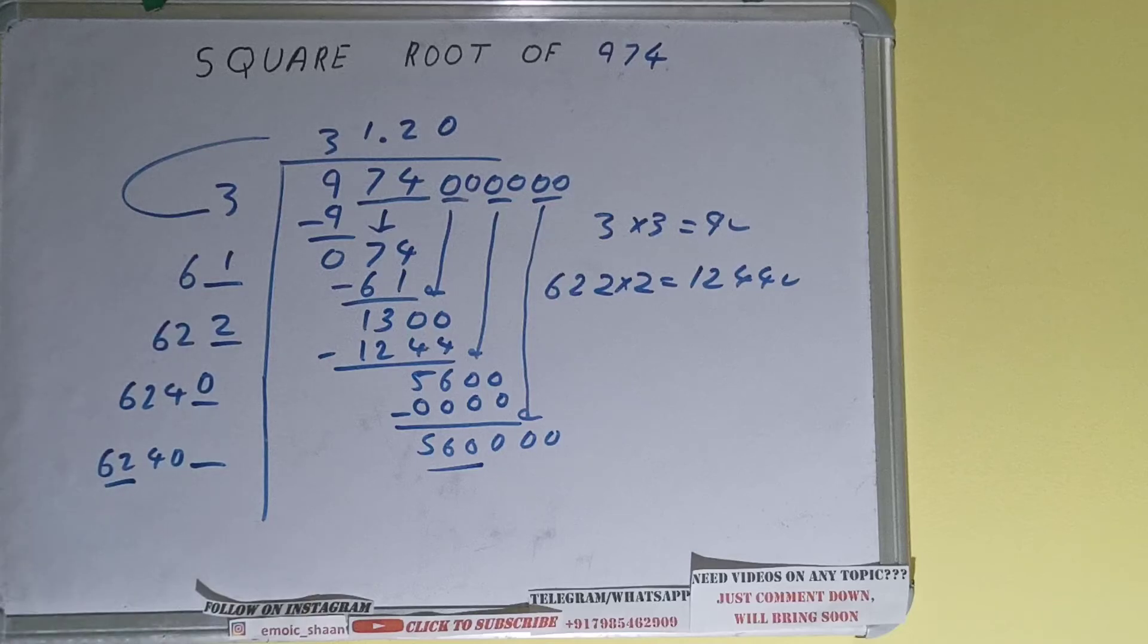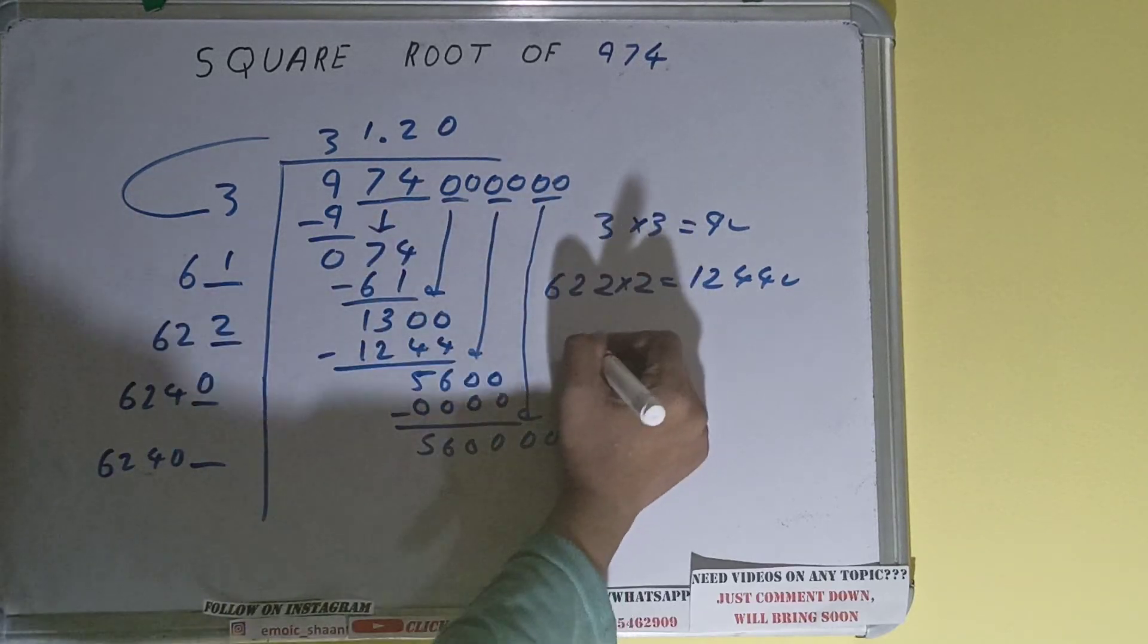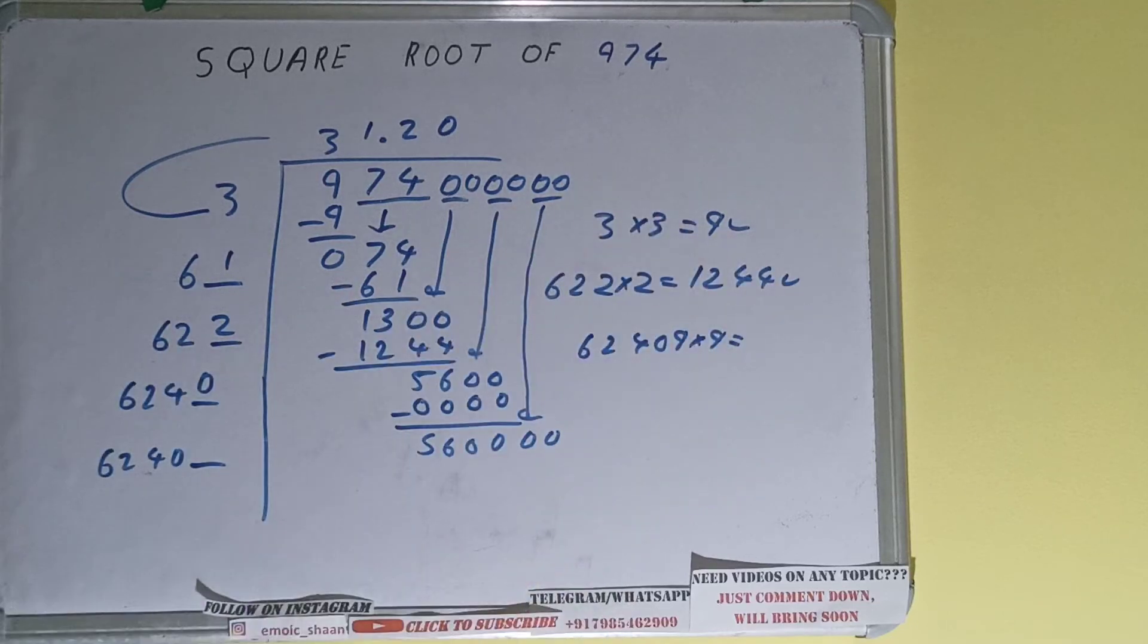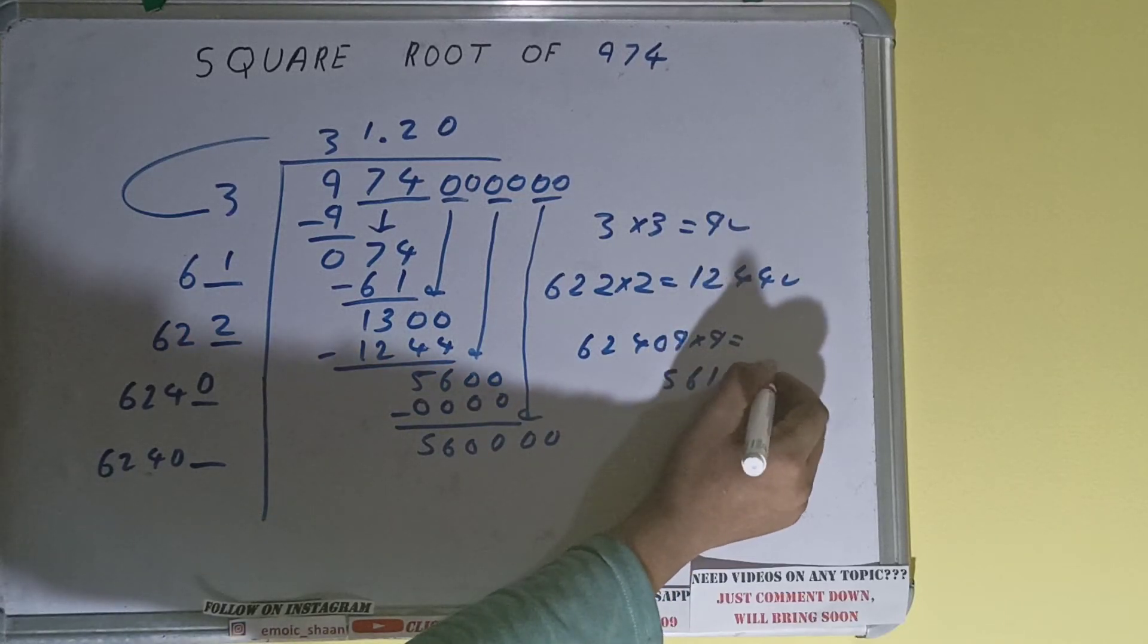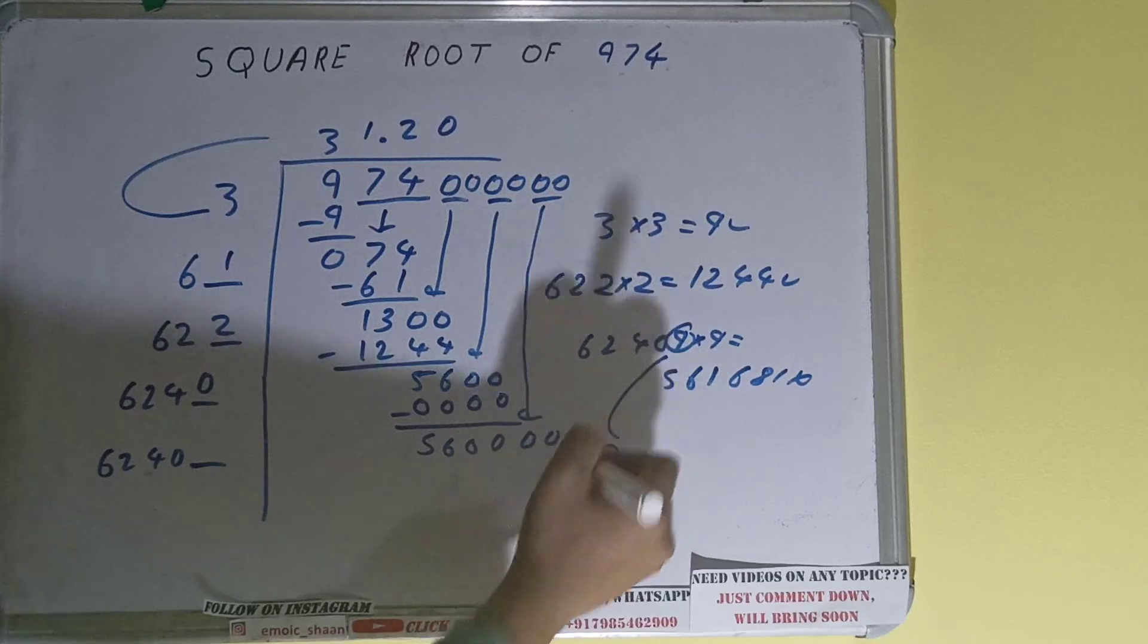So 6240 times 9 into 9 we can try, and it will be 56168, which is bigger. So with this we understand that 9 will not work, but 8 will surely work.